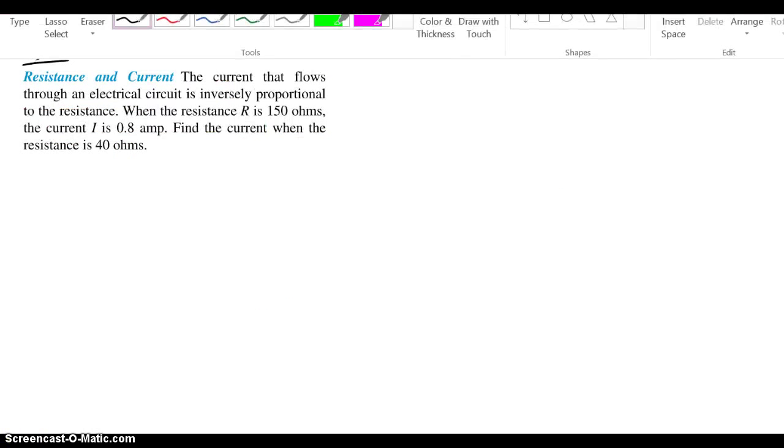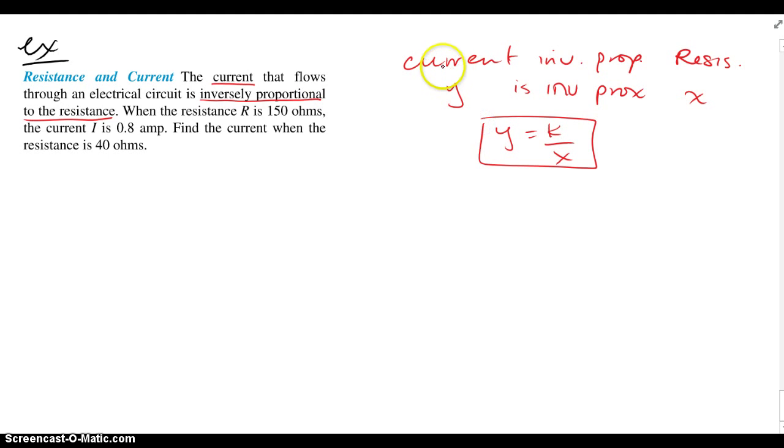Let's look at another example. It says resistance and current is what they're talking about. It's an application from physics. The current that flows through an electrical circuit is inversely proportional to the resistance. So the current is inversely proportional to the resistance. When the resistance is 150 ohms, the current is 0.8 amps. Find the current when the resistance is 40 ohms.